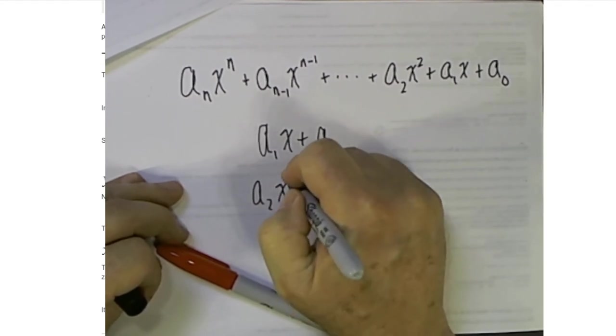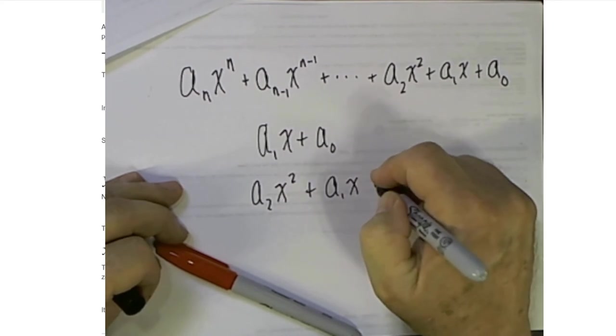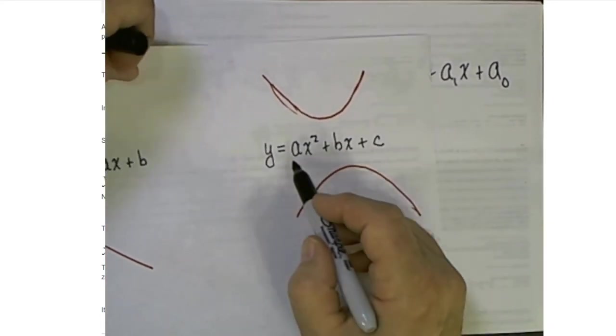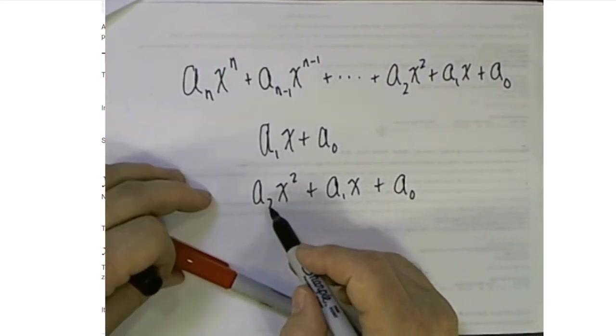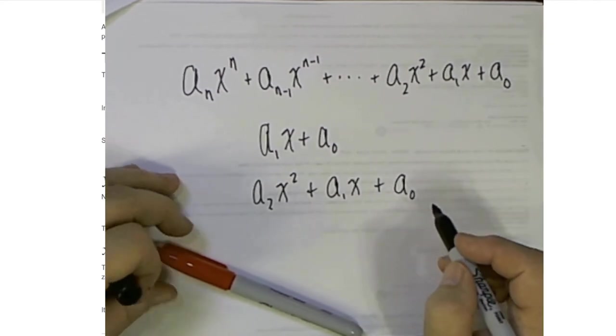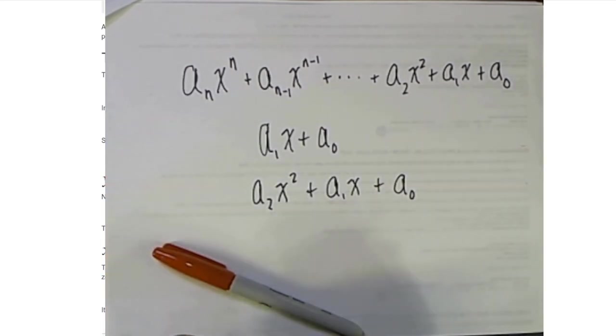That would be like this first degree polynomial that we were looking at earlier. A second degree polynomial would be a₂x² plus a₁x plus a₀. So what we used to call ax² plus bx plus c, we would call a₂x² plus a₁x plus a₀. And now you can see how you could look at a third degree polynomial or a fourth degree polynomial.